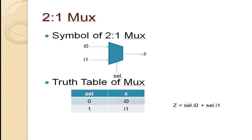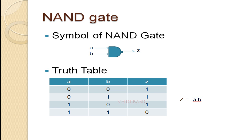This is the Boolean expression of the 2-to-1 MUX: Z equals Select-bar dot I0 plus Select dot I1. This is the simple diagram of the NAND gate, where A and B are the inputs and Z will be the output.